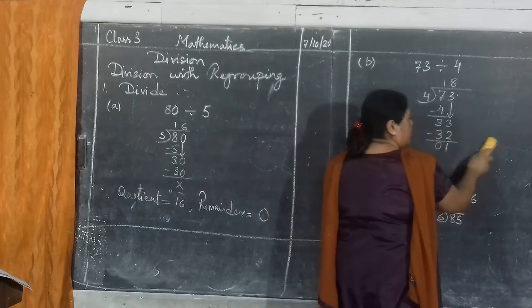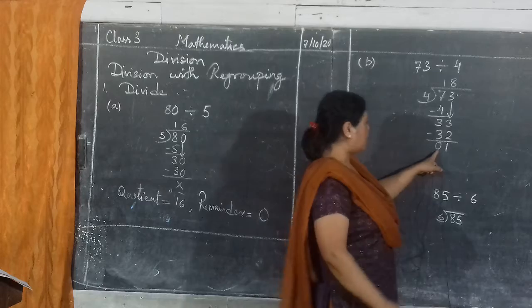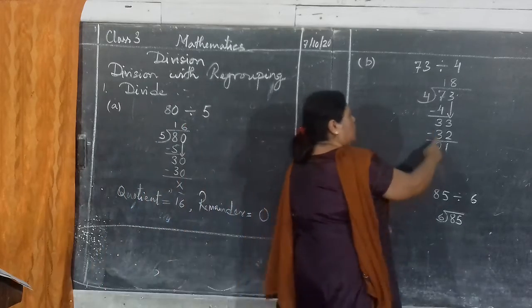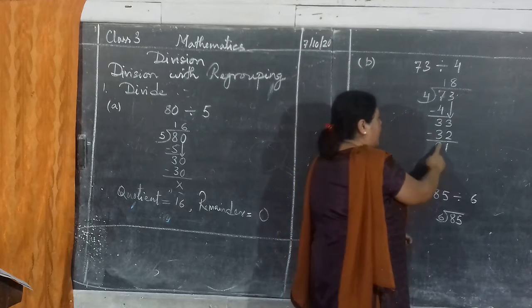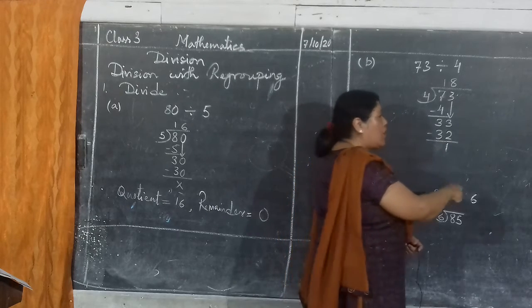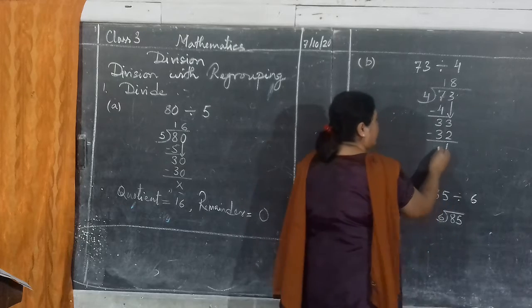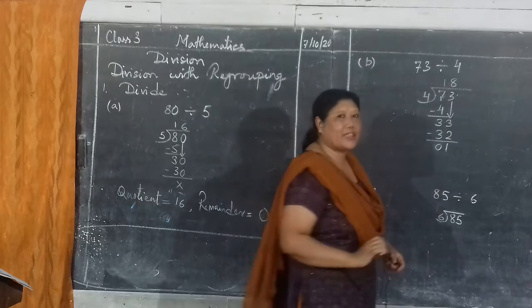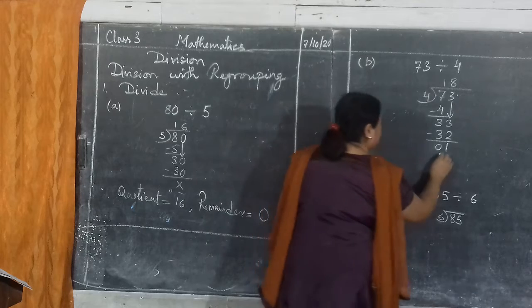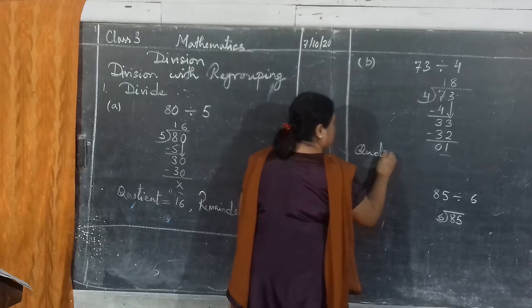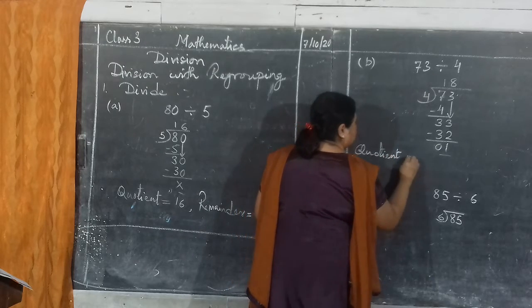This 0, if I said 3 minus 3 is 0, if I said not to write it, you will do the same thing here also. That's why I am writing it for you, because you are in class 3. So, quotient is 18 and remainder is 1. 01 means 1 only.